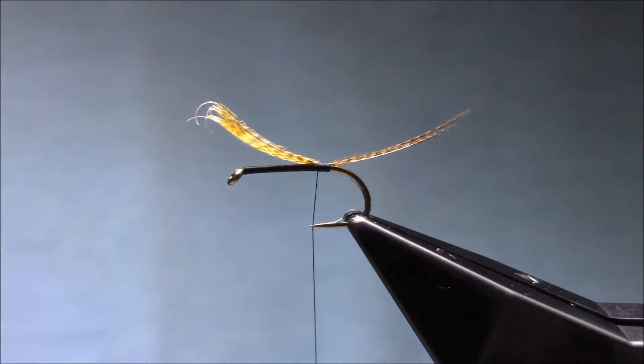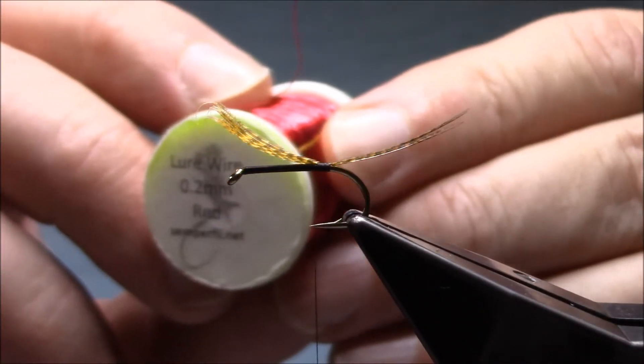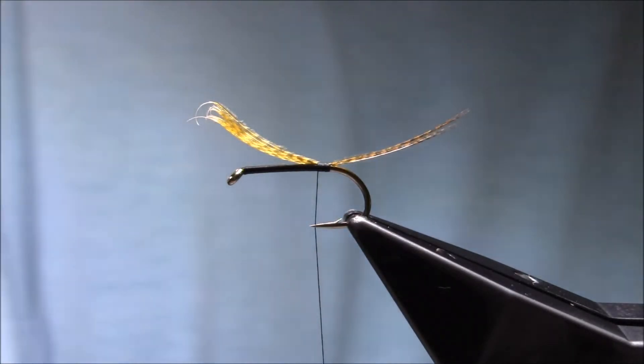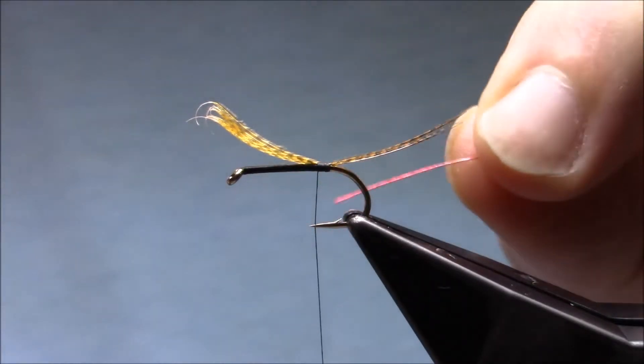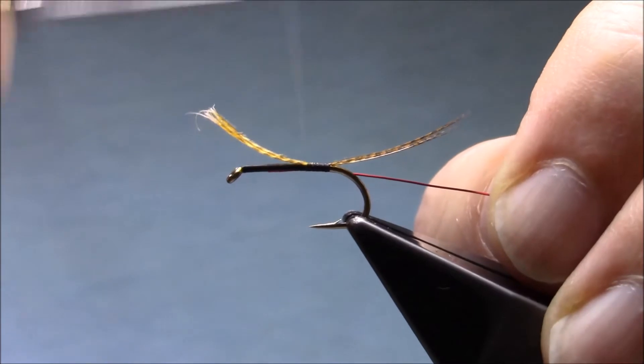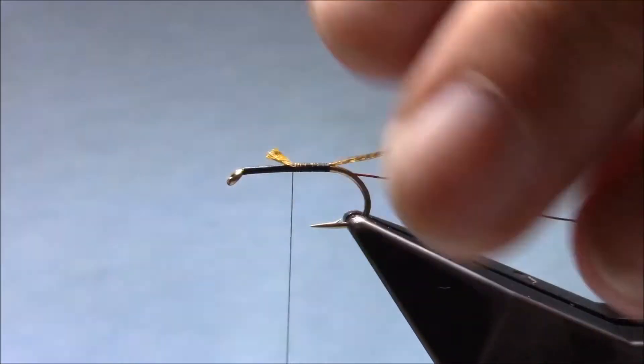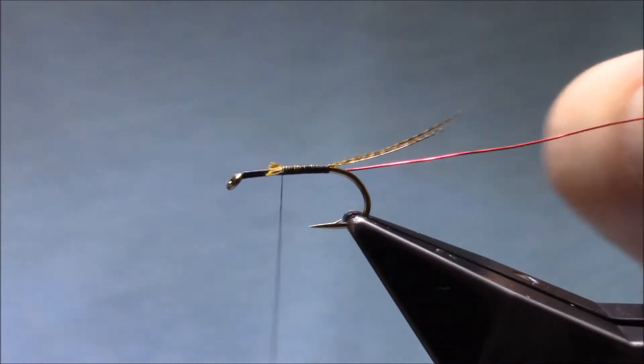On the way up I'm just going to catch in a rib. This is Semperfly red wire, and back down to the tail.